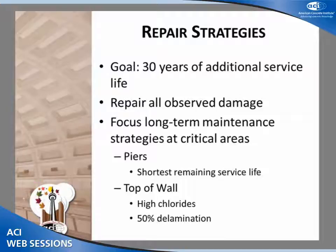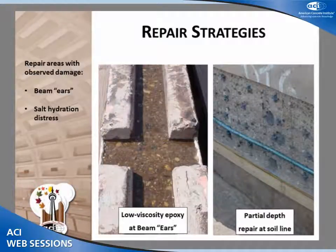Our goal is 30 additional years of service life. Obviously we'll address all the visible surface damage, but having done our service life analysis and laboratory studies, we feel comfortable that the piers are our weak link — where we need to focus our long-term maintenance strategy. The top of the wall is also a critical focus, with high chlorides and already 30 to 50% delaminated.